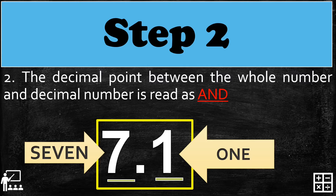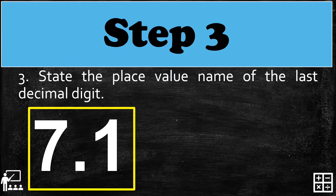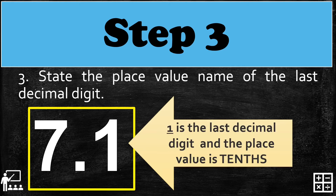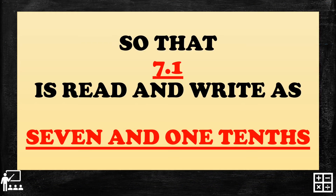We have a whole number part, so we use 'and.' Our example is now read as 'seven and one.' Step three: state the place value name of the last decimal digit. One is the last digit and its place value is tenths. So seven point one is read and written as 'seven and one tenths.' We use 'and' because we have a whole number part, which is seven.